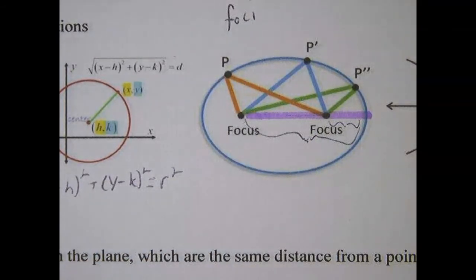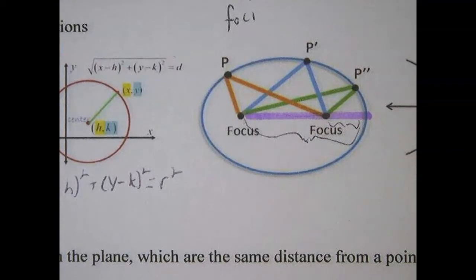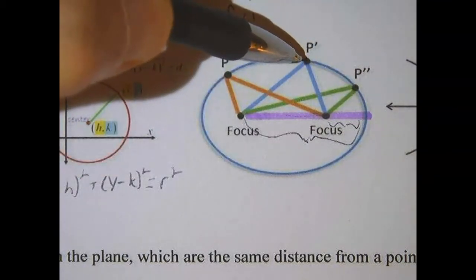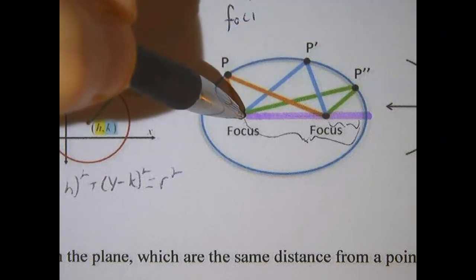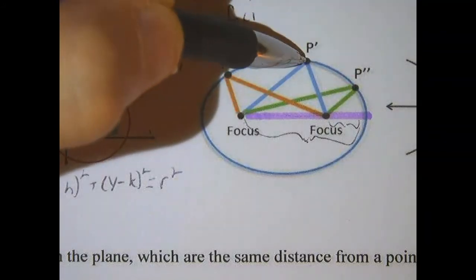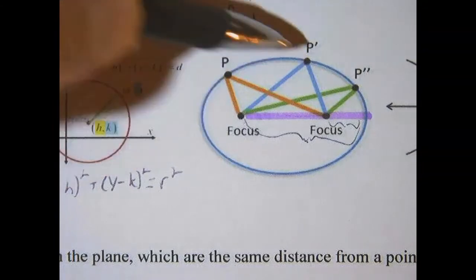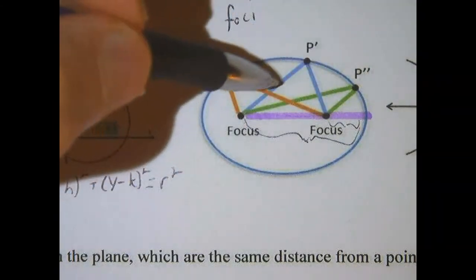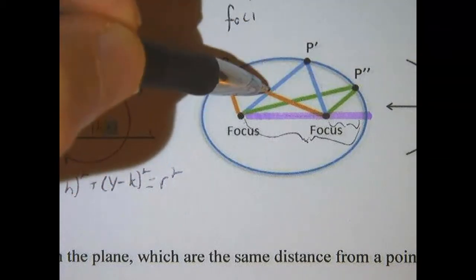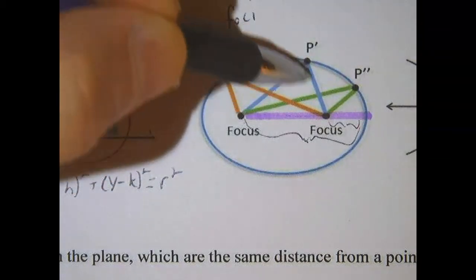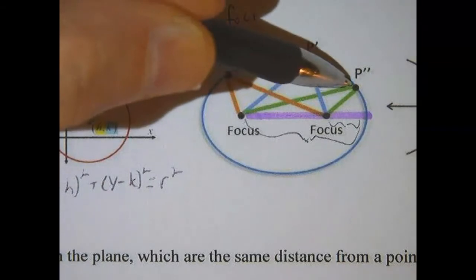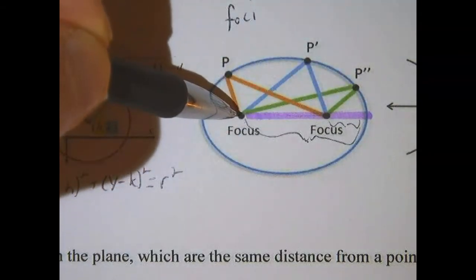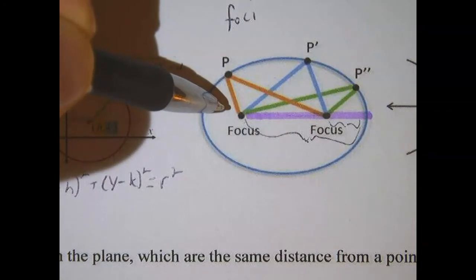And the thing that makes this an ellipse, the definition of an ellipse, is it's the set of points that the distance from the point to one focus, plus the distance from that same point to the other focus, is equal for all of these. So there's not that the two parts of the blue segments are equal, but the sum of the blue segments, plus the sum of the green segments, plus the sum of the orange segments, are all the same sum.